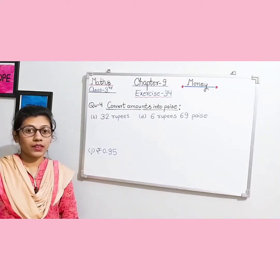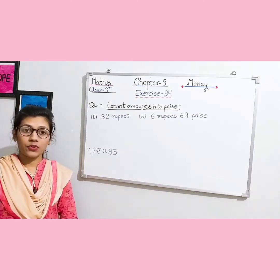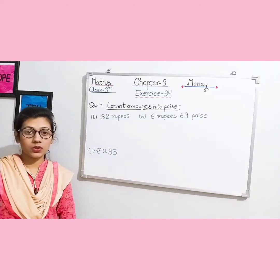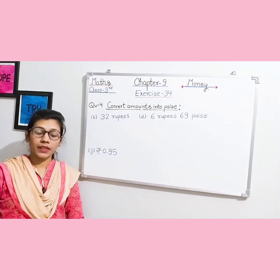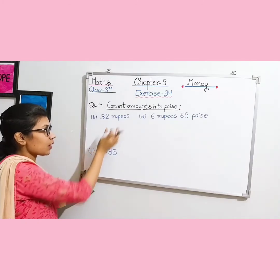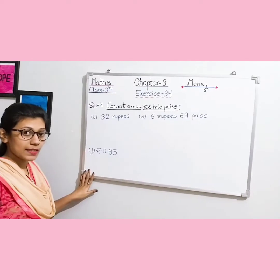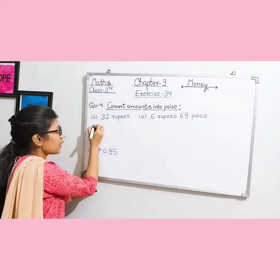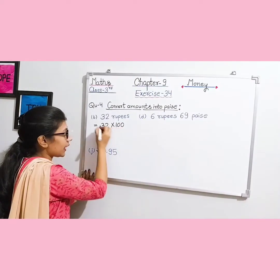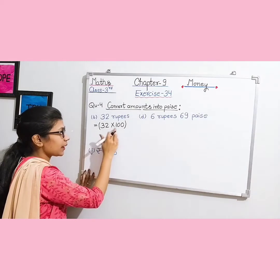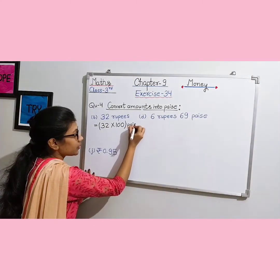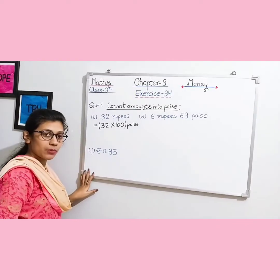Now question number 4: 'convert the given amount into paise'. We know 1 rupee = 100 paise. For example, question B: 32 rupees — to convert to paise, we multiply 32 by 100. The unit changes from rupees to paise. When we multiply any number by 100, we simply add two zeros to the number.